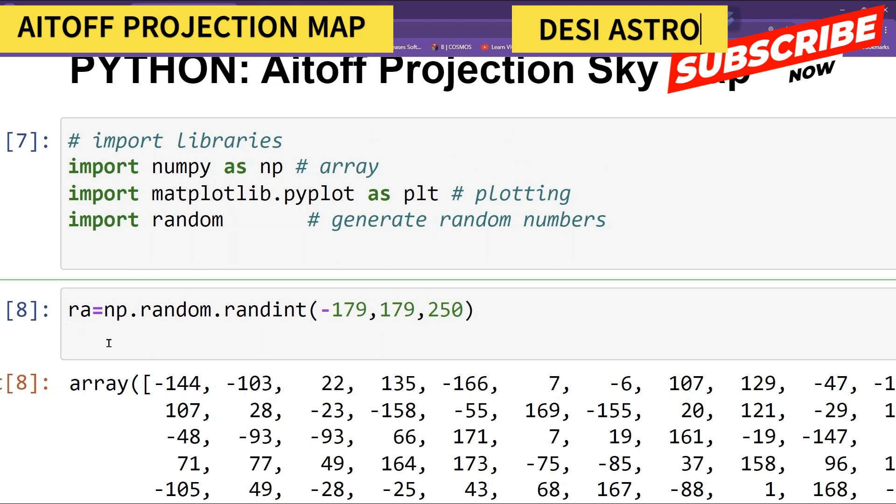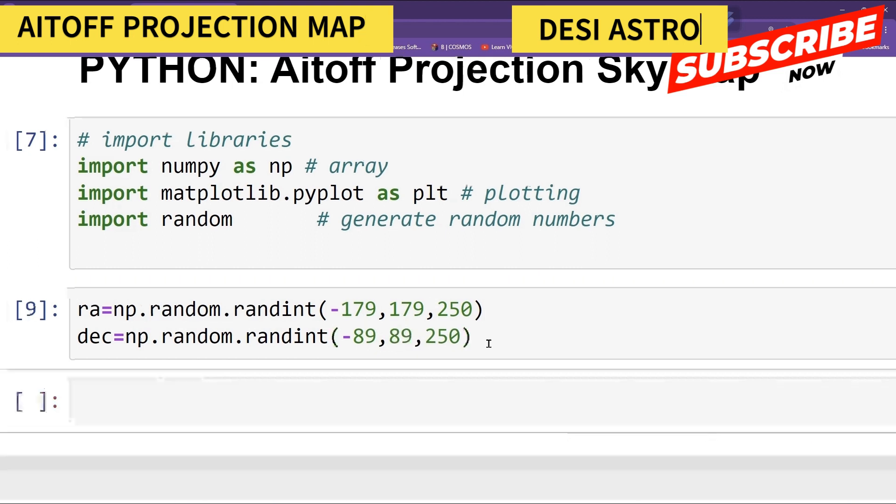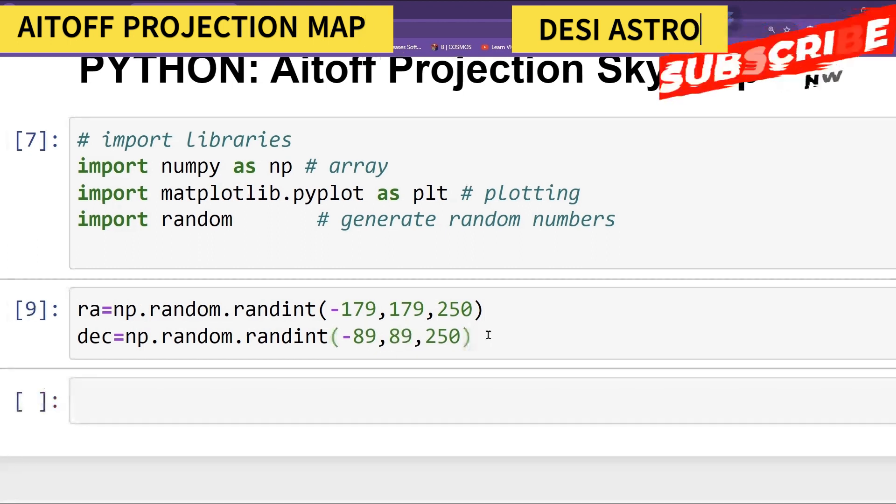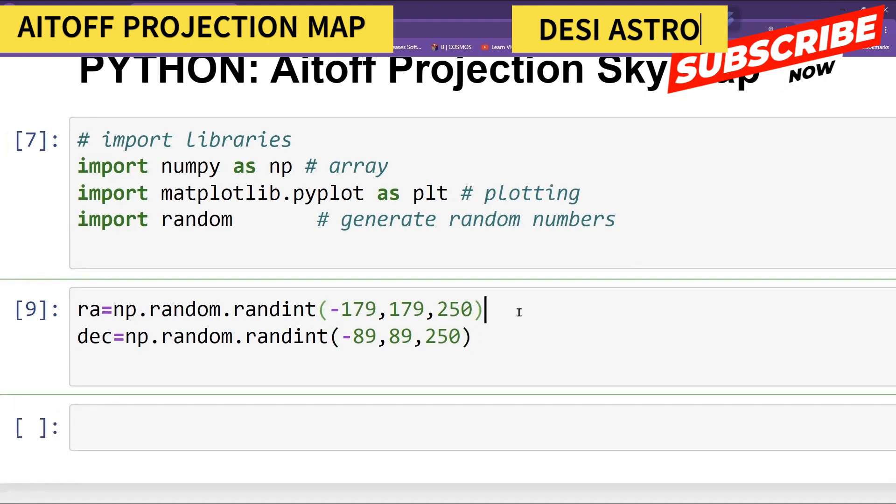Similarly, you can define your DEC equal to same length, and DEC you can give from minus 89 to 89, because maximum is plus 90 and minus 90, right? So this is RA of sky objects and this is DEC of sky objects.